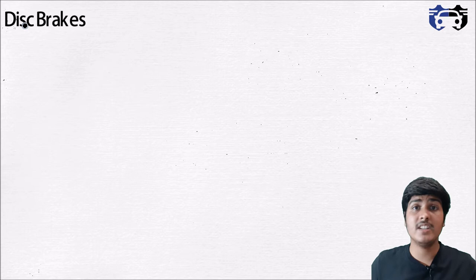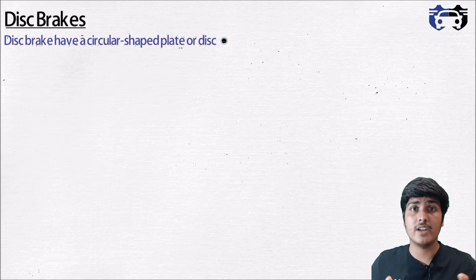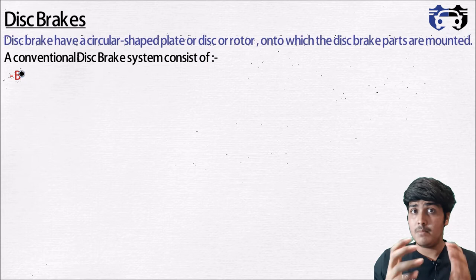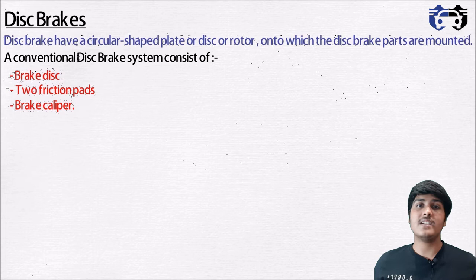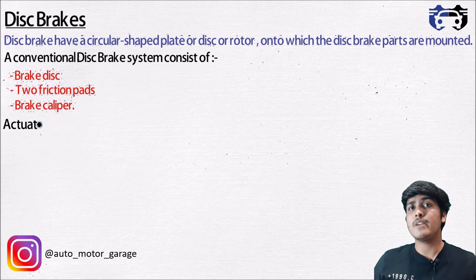There are different categories of brakes. Here I will be discussing about the disc brake. As the name implies, disc brakes have a circular shaped plate or disc or rotor onto which the disc brake parts are mounted. A conventional disc brake system consists of a brake disc, two friction pads, and a brake caliper. The friction pads apply grip on the external surface of the disc to perform the braking.